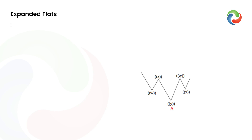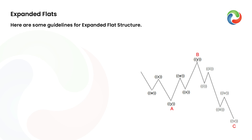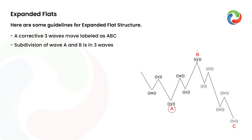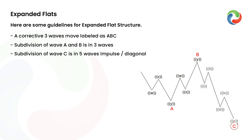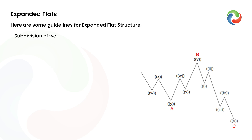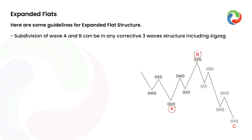Expanded Flats. Here are some guidelines for expanded flat structure. A corrective three-wave move is labeled as ABC. Subdivision of wave A and B is in three waves. Subdivision of wave C is in five waves impulse or diagonal. Subdivision of wave A and B can be in any corrective three-wave structure, including zigzag, flat, double three, or triple three.